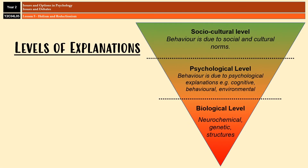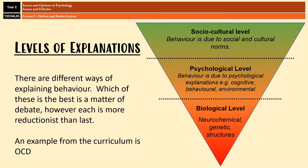The reductionist approach can also be split into different levels known as levels of explanation. The idea is that researchers can try to explain and understand an aspect of human behavior by focusing on just one of these levels. It's basically a hierarchy of explanations, with each layer being slightly less reductionist than the one before it when working from the bottom up. The lower levels of explanation consider physiological explanations, where behavior is explained in terms of neurochemicals, genes, and brain structure.